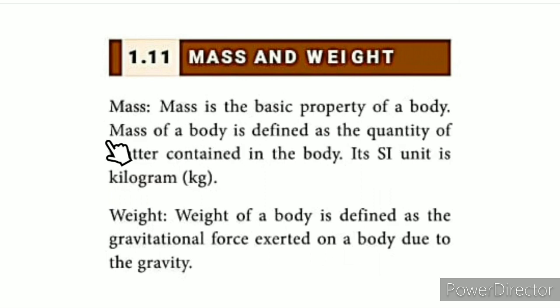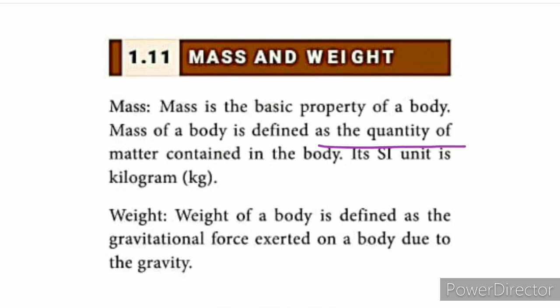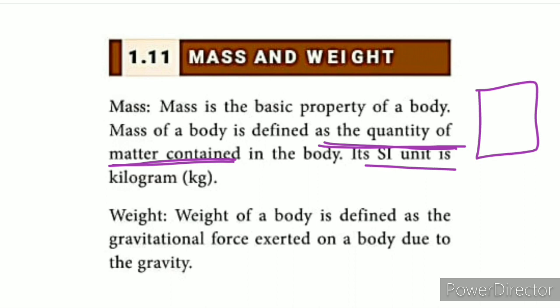Mass is the basic property of your body. Mass is defined as the quantity of matter contained in the body. It is constant — whether you go to the moon or anywhere else, the quantity of matter contained in the body does not change. The SI unit of mass is kilogram, and mass is always constant.